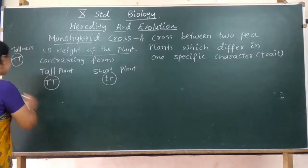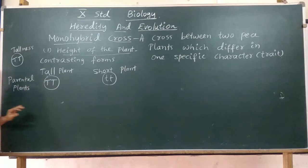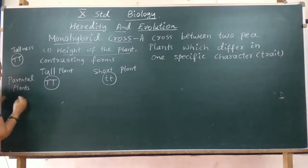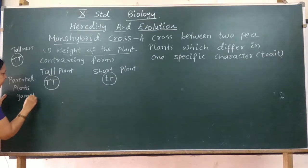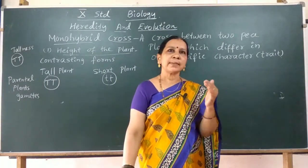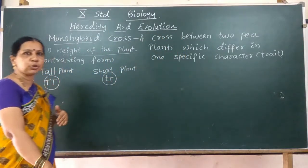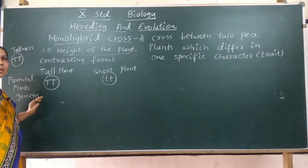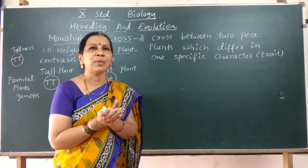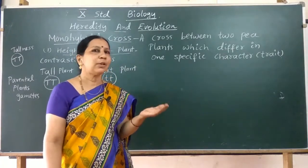These parental plants produce gametes. During sexual reproduction, when gametes are produced, the chromosome number is reduced to half. Half the number of chromosomes and half the amount of DNA is received by the gametes. So if the parent has capital T and small t, each gamete receives only one factor. When two gametes unite, the number doubles again, so the organism can survive normally.